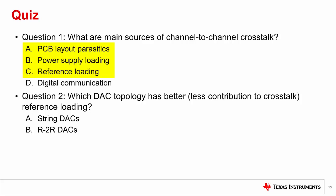Question 2: Which DAC topology has better reference loading? And by better, we mean less contribution to crosstalk. Is it A. String DACs or B. R2R DACs? The answer is A, String DACs. The primary reason why DAC topology can result in channel-to-channel crosstalk is that a resistive load on the reference changes. Recall that R2R DAC resistor ladders have a code-dependent total impedance from the perspective of the reference. String DACs have a constant load on the reference, regardless of the code.